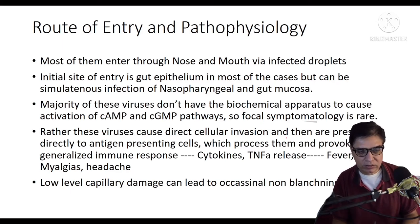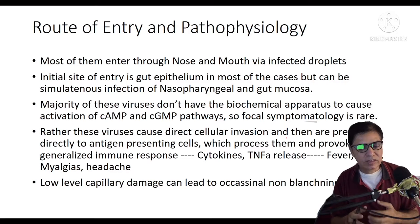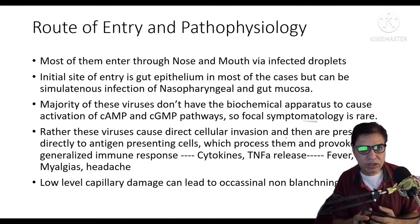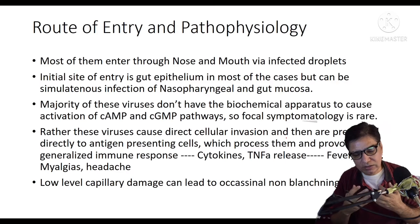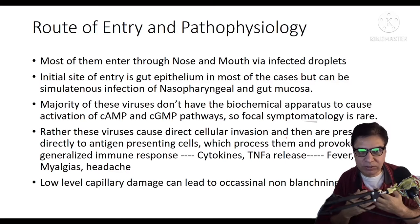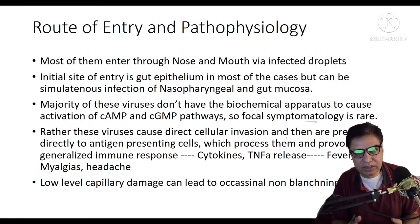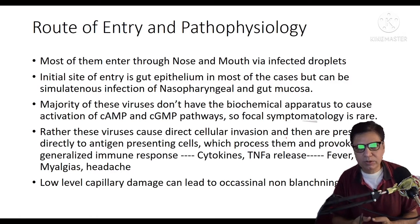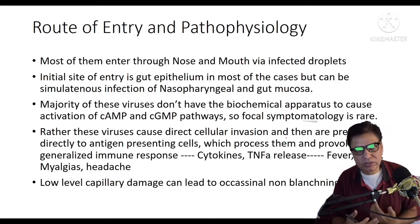The enteroviruses and adenoviruses that cause generalized viral infections do not have the biochemical machinery to activate the cyclic AMP and cyclic GMP pathways. In upper respiratory tract infections, viruses permanently activate the cAMP and cGMP pathways, producing intracellular material causing congestion and inflammation — giving stuffiness, rhinorrhea, and post-nasal drip. Because these viruses do not activate cAMP and cGMP in the intestinal epithelium, there is no diarrhea and no intestinal symptomatology — they simply enter through the intestinal epithelium and go into the blood.